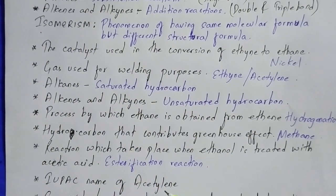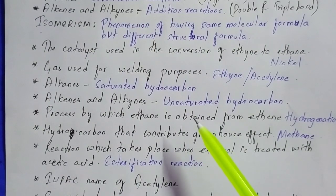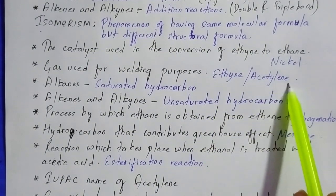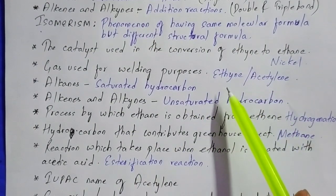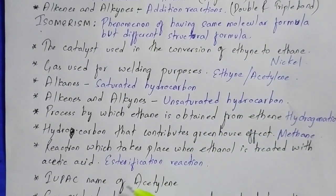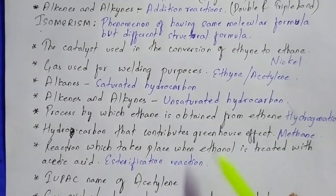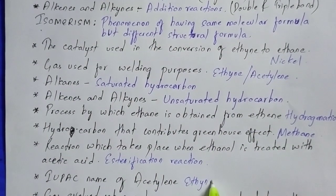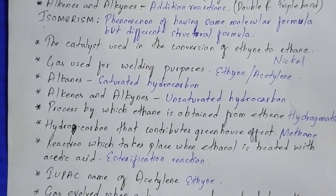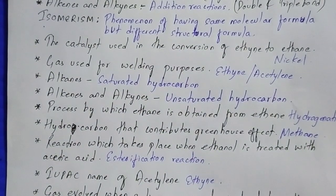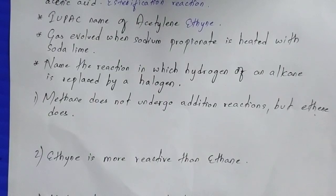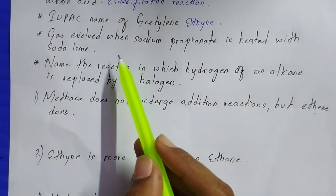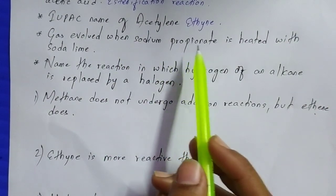You have to write the IUPAC name of acetylene. The IUPAC name is ethyne. Acetylene is the common name of ethyne, and ethyne is used for welding purposes. You must remember this.